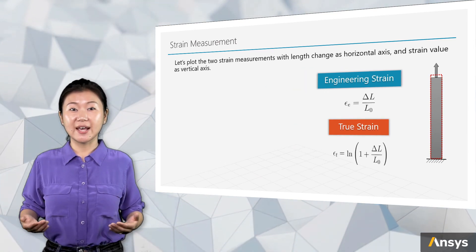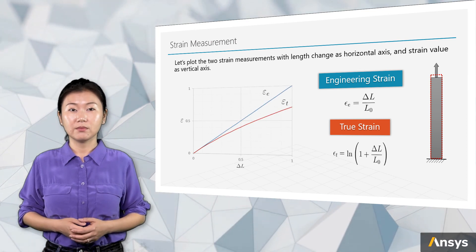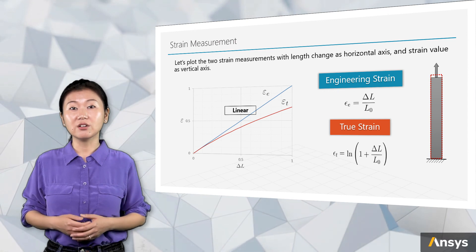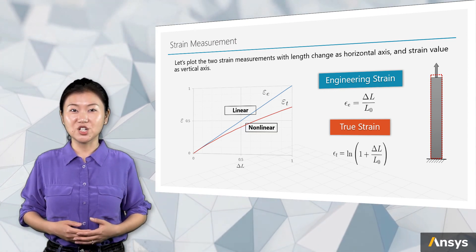Let's make the length change as horizontal axis and plot the two strain values. Engineering strain is a straight line, while true strain is a nonlinear curve, and they deviate from each other with increasing deformation here.